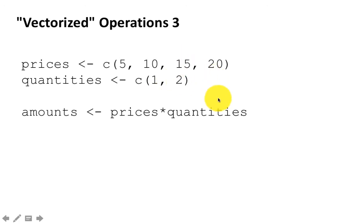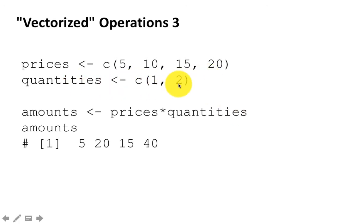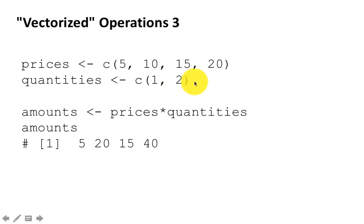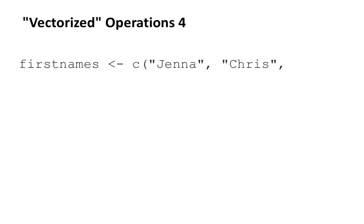R recycles the smaller vector — repeating it as many times as needed to match the size of the larger vector — then performs the regular vector operation. So (1, 2) becomes (1, 2, 1, 2), and the multiplication proceeds normally. This is called recycling. We won't use it often in this course, but you'll encounter it in other R code and need to understand what's happening.